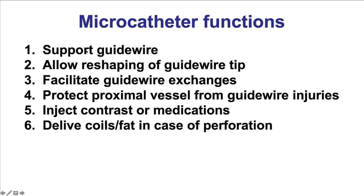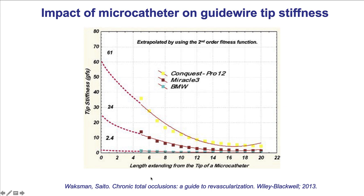The number one indication for using a microcatheter is to support the guide wire. It also allows removal and reshaping of the guide wire tip and exchange of the guide wire for another without losing the position gained during wiring. Microcatheters, especially in the retrograde approach, protect the proximal vessel from guide wire-induced injuries, and they can also be used to inject contrast or medications and to deliver coils or fat in case of a perforation.